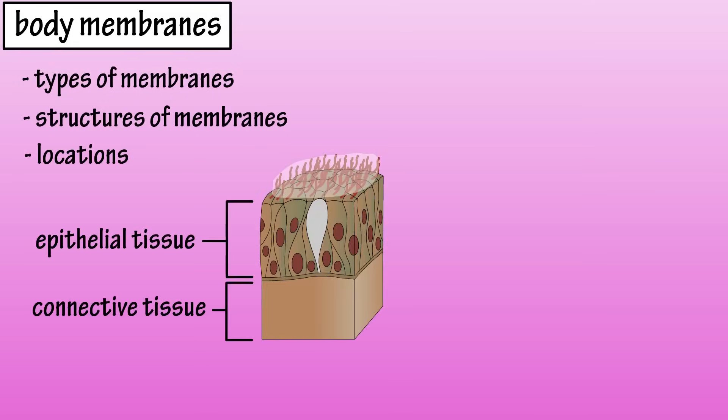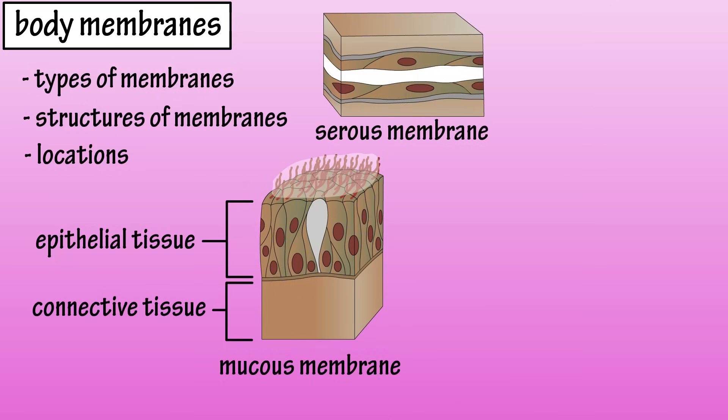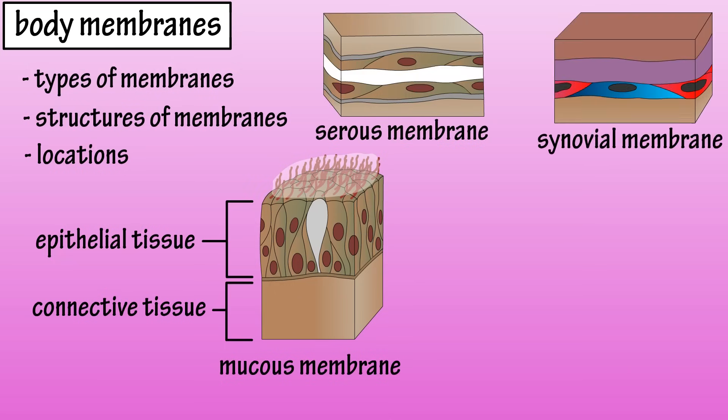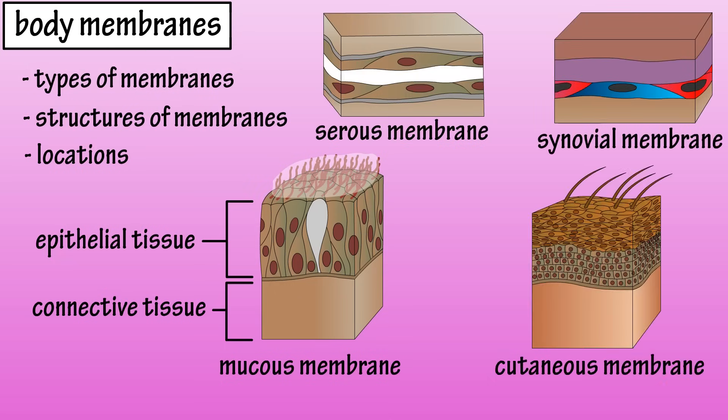In this video, we're going to go over the types of body membranes, their structures, and the different areas in the body that they're located. Body membranes are comprised of epithelial tissue and connective tissue, and there are four types found in the body: mucous membranes, serous membranes, synovial membranes, and the cutaneous membrane.